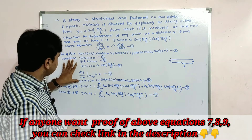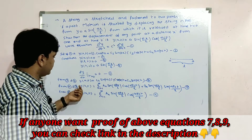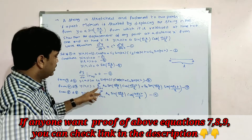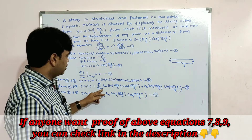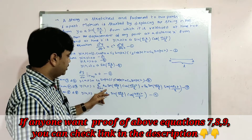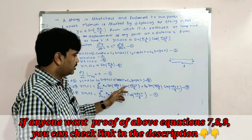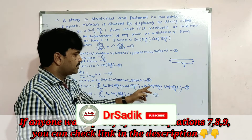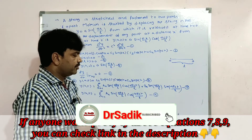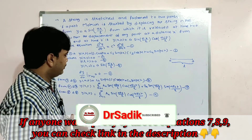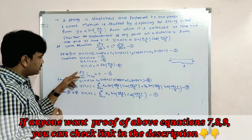Using condition 4 and the previous result, we finally get the series solution: y(x, t) = Σ (n=1 to ∞) [aₙ sin(nπx/L) cos(nπct/L) + bₙ sin(nπx/L) sin(nπct/L)].